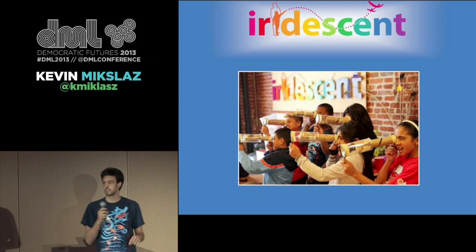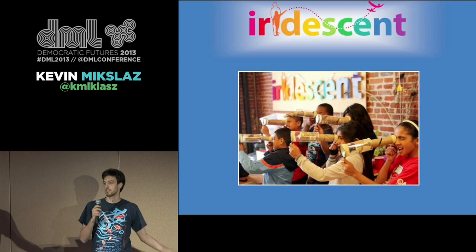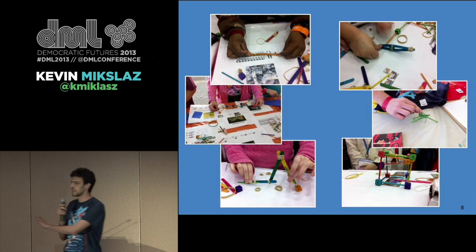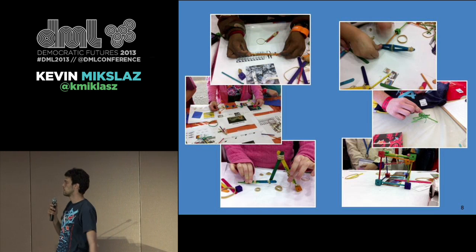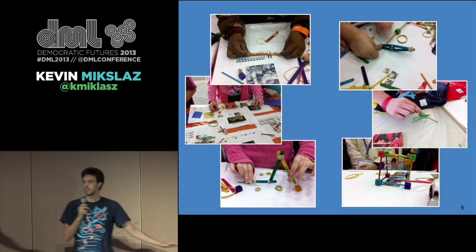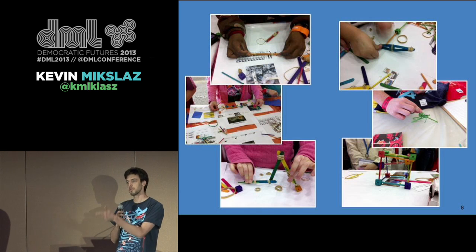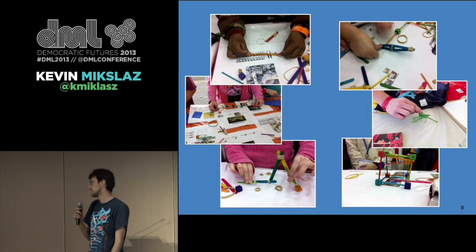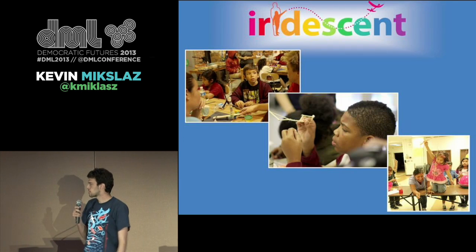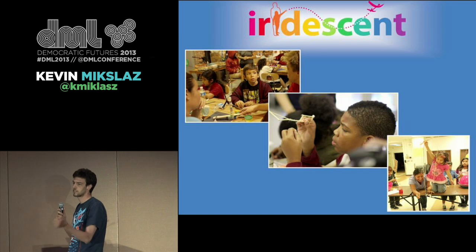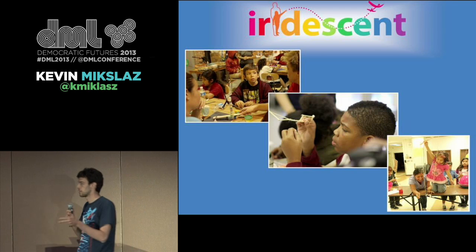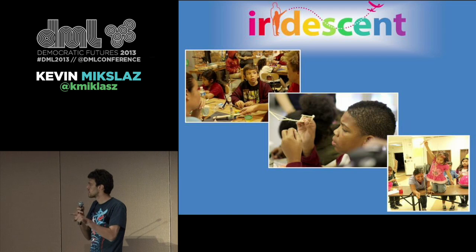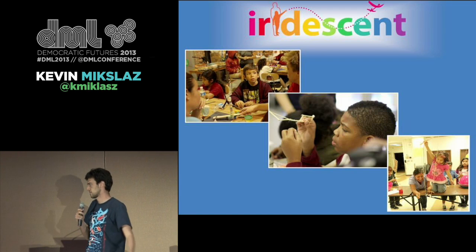Building a self-launching catapult — the first design a kid did almost never worked. It took the third, fourth, sometimes fifth design until they finally achieved success. If you watched a kid go through this process, there were three stages: first, fear, humiliation, and failure at their initial attempt; second, persistent focus as they realized what they needed to do to fix it; and finally, jubilation at their eventual success.